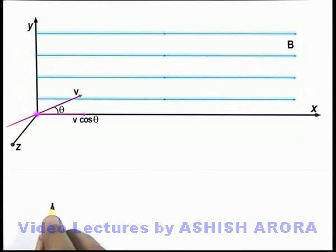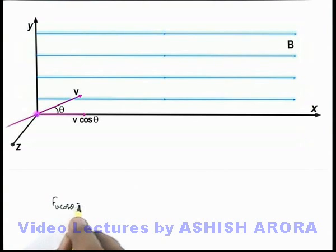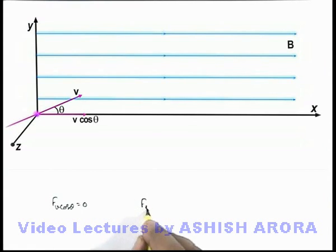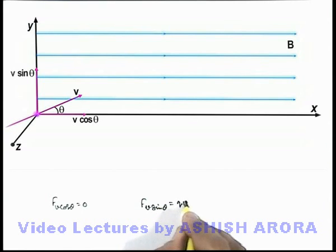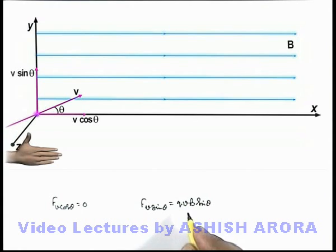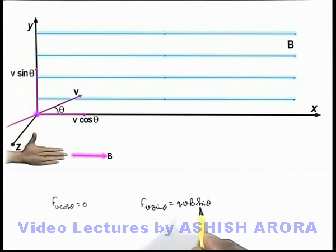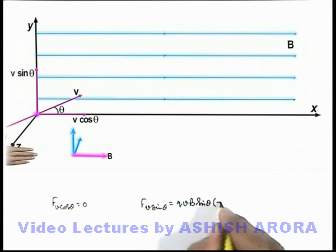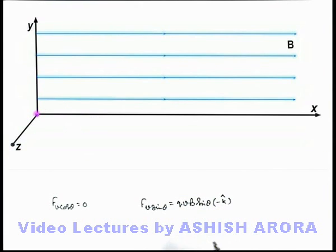We can say the force acting on the particle due to v cos theta is equal to zero. The force experienced due to the velocity v sin theta will be qvB sin theta. By the right hand palm rule, fingers are pointing in the direction of magnetic induction, and the thumb along the direction of v sin theta, so the palm is pointing in the direction of minus z-axis. So we can put the unit vector minus k-hat here.